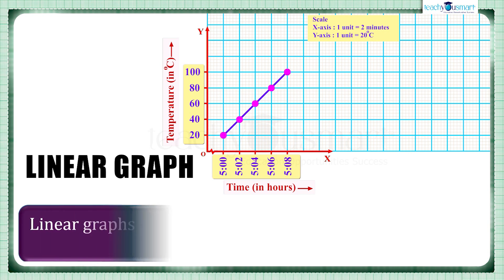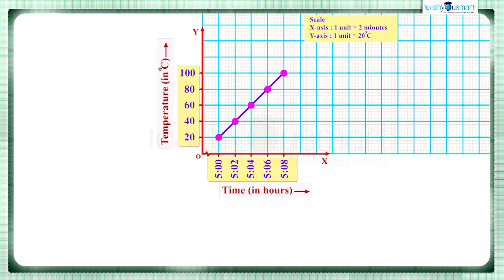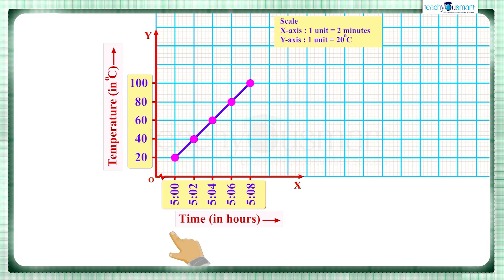Linear graphs are straight line graphs that represent the linear relationship between two quantities. Here we can see that as the time increases, the temperature also increases. That is, with the change in one quantity there is change in another quantity. Here the temperature increases linearly with time.